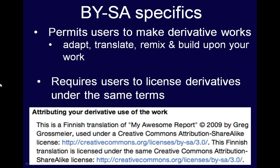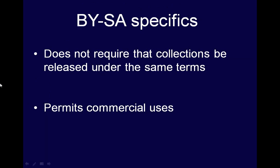Next, BY-SA requires users to license derivatives under the same terms. Your work and everything based on it must be available on the same open terms to future users. So the new film based on your BY-SA novel must be released under BY-SA, and the Swahili version of your BY-SA textbook must also be released under BY-SA. Users who create a derivative from content licensed under BY-SA may not release derivatives under the terms of any other Creative Commons license — once it's under BY-SA, it has to stay under BY-SA. BY-SA also permits commercial uses, so users are free to sell your work as well as any derivatives. For example, users are free to charge admission when they show your BY-SA movie, or their own movie based on your BY-SA novel.